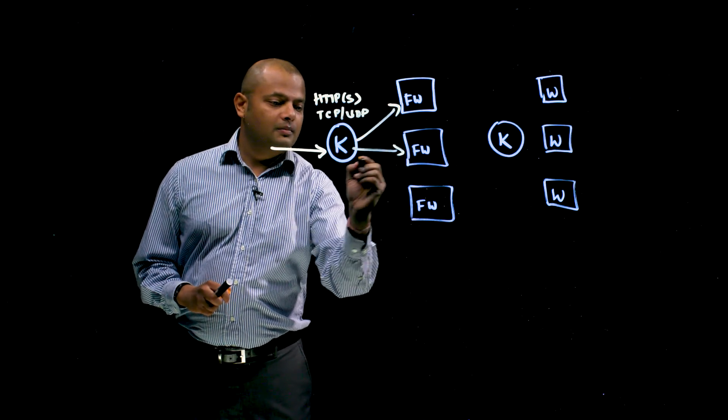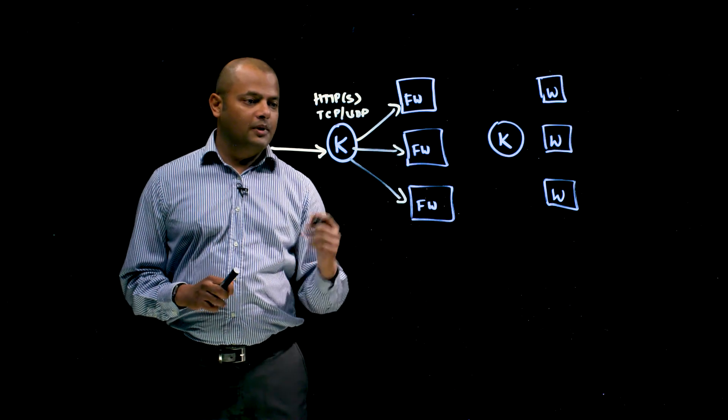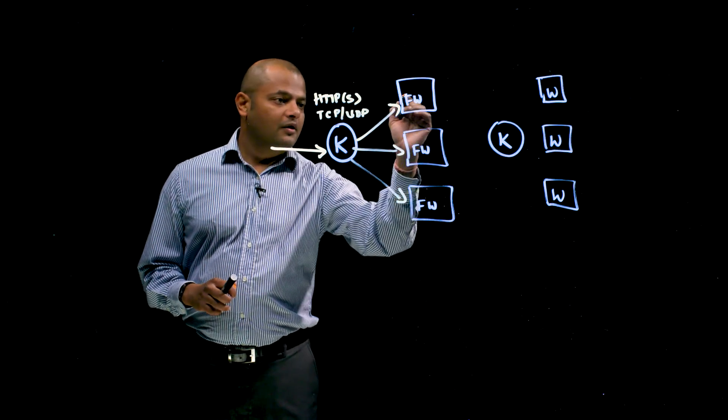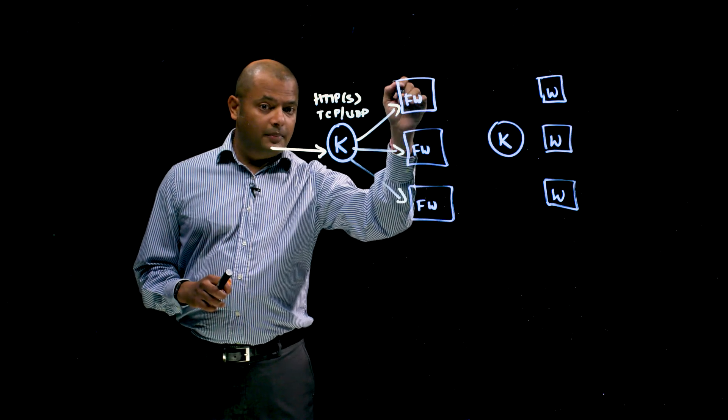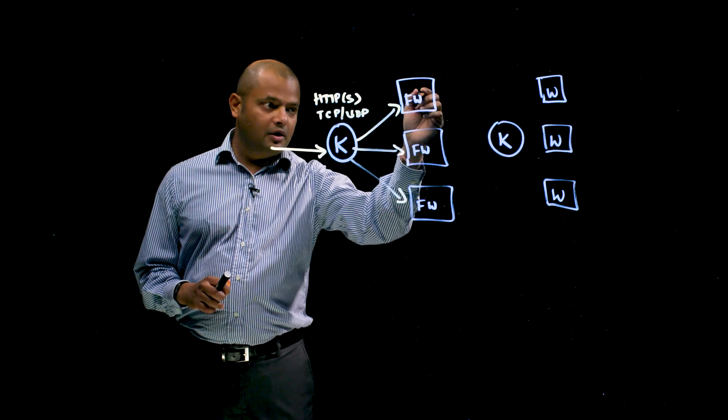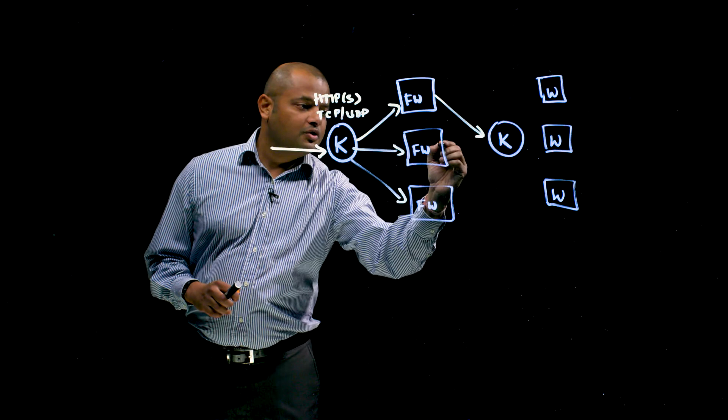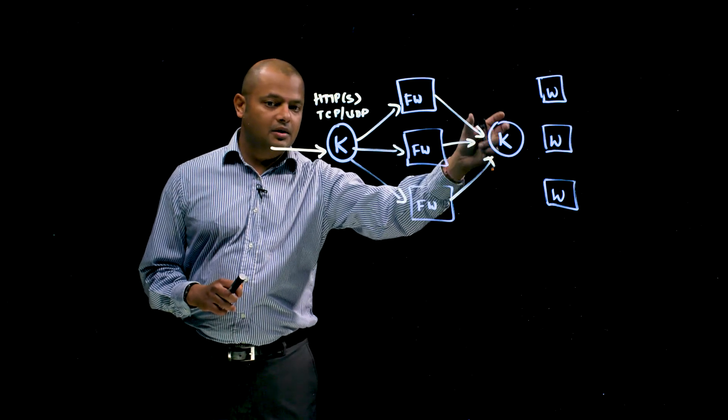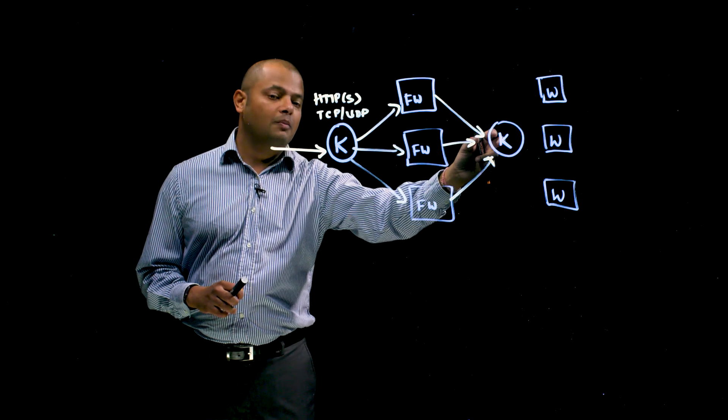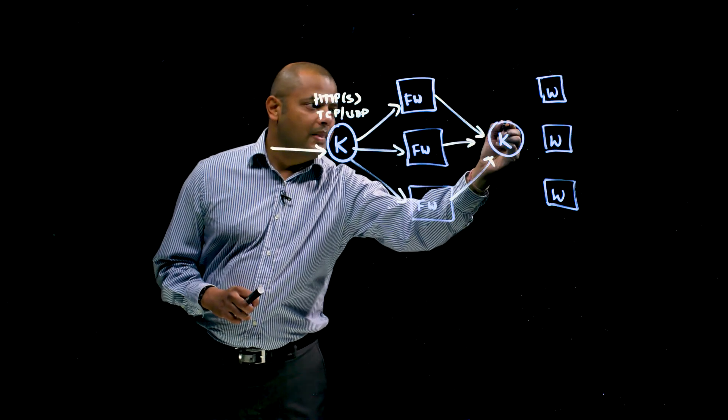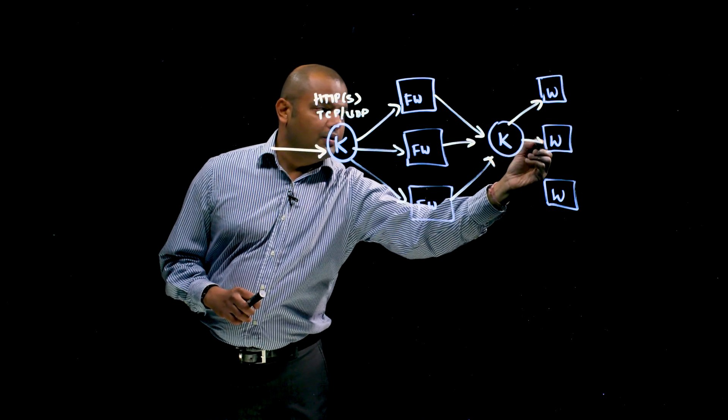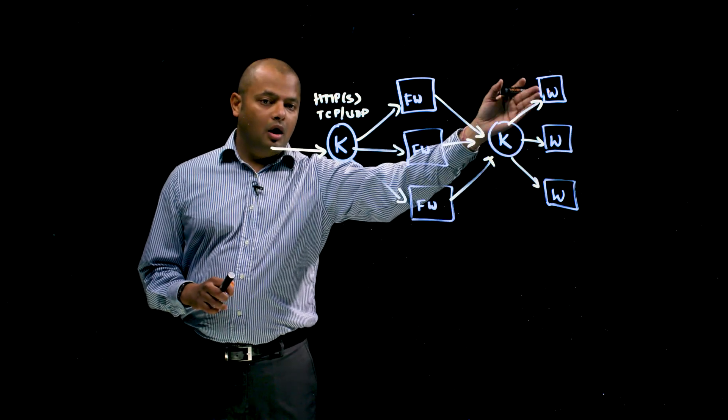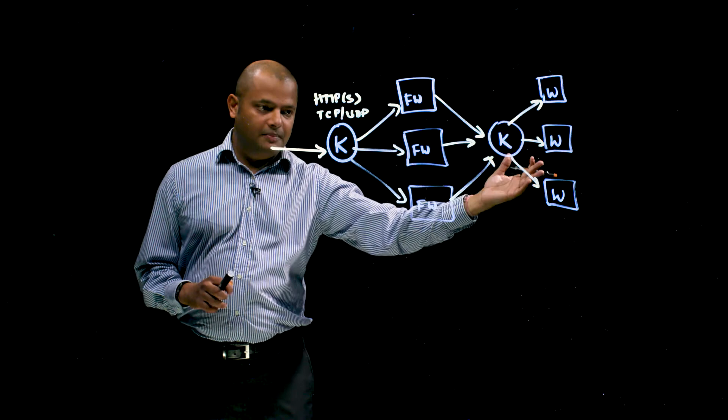Traffic comes to the load balancer. It spreads the load across a number of firewalls that you've deployed behind it to match the scale needs that you have. The firewalls will inspect that traffic based on the policies you configure. And then the firewalls will send the traffic to the internal load balancer. So this is a standard TCP UDP internal load balancer provided by Google. And then this load balancer spreads the load across to the front end of your application, which is typically a web tier.